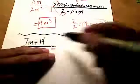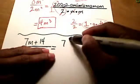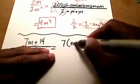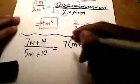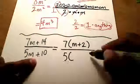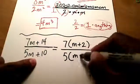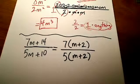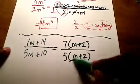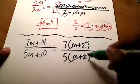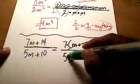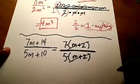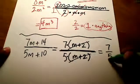Let's forget about the denominator for a second and factor the numerator. What do those two terms have in common? A 7. Take it out and what's left is m plus 2. Check: 7 times m is 7m, 7 times 2 is 14. Now the denominator: what do these two terms have in common? A 5. Take it out — what's left is m plus 2. Now the m plus 2s are exactly the same, so we can cross those out. It was 7 times (m+2) and 5 times (m+2) — written as multiplication, that undoes the division. Final answer is 7 fifths.